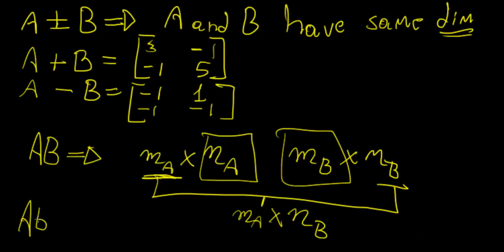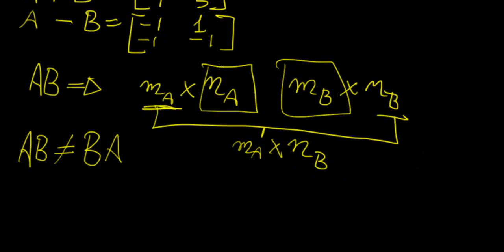One important thing to note is that this multiplication operation is not commutative. So A times B is not the same as B times A. We showed that if the inner dimensions are equal for A times B, they may not be equal for B times A, meaning that operation cannot happen. The order actually matters when it comes to matrix multiplication.